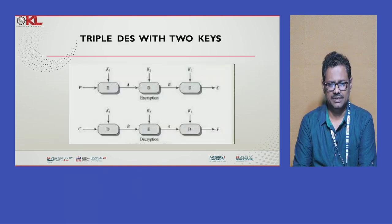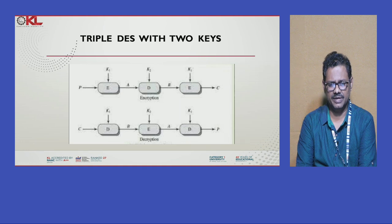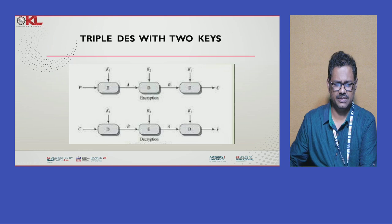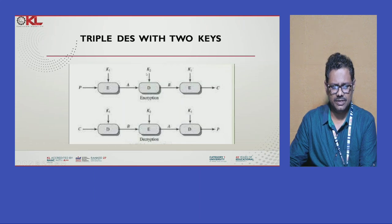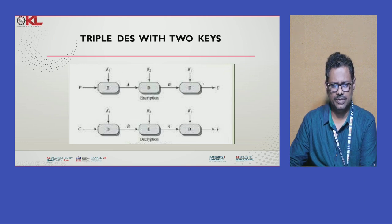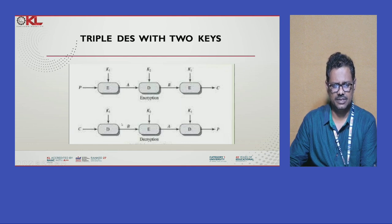Triple DES with two keys: in double DES we apply only two keys. In triple DES we also apply two keys, but we encrypt the data three times. Plain text is encrypted with K1 to get product A, then K2 is applied to get B, then K1 is applied again to get the final cipher text. So K1 is applied two times and K2 is applied only one time. Even though encryption is applied three times — K1, K2, K1 — we are using only two keys. That is why triple DES is referred to as triple DES with two keys.